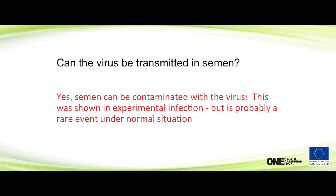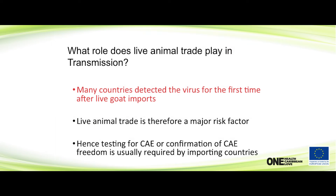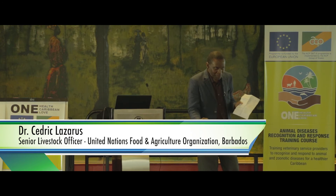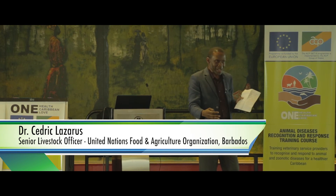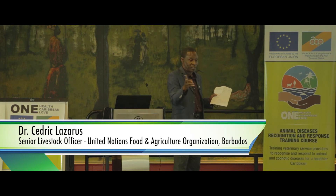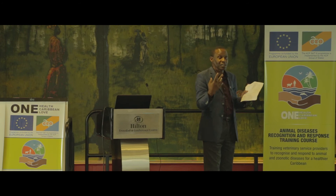People don't think that AI will spread the virus because it's very rarely found in semen, as with most viruses, or in embryo transfer. Many countries detect the virus for the first time after live goat importation, especially live dairy goat importation. Live animal trade is therefore a major risk factor — a very big risk factor. That's what Caribbean countries are concerned about: will I get CAE from importing animals?